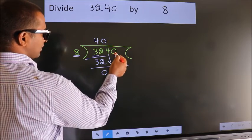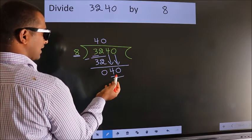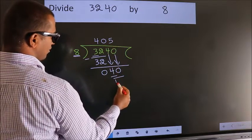Then only we can bring down this number. So 40. When do we get 40 in the 8 table? 8 fives are 40.